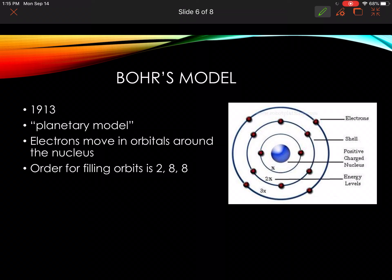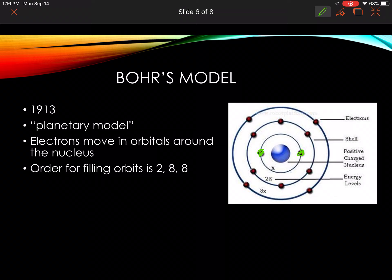Then we moved into Bohr's model. Niels Bohr in 1913 — his model is known as the planetary model. In this one, electrons move in orbitals around the nucleus. Inside the nucleus are the protons, and then the electrons move around in what's known as orbitals or shells. The order for filling the orbitals is 2-8-8, meaning the first shell can only hold two electrons, the second one can hold up to eight, the third one up to eight, and so on. Do a sketch of the Bohr model in your notes.